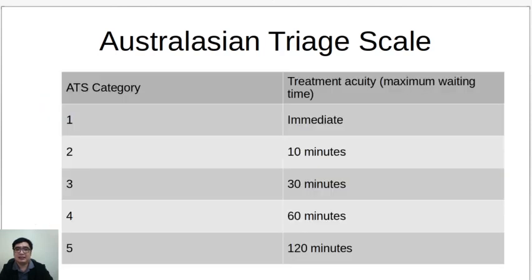The categories are important because you have an associated maximum waiting time. For category one, you need to treat these patients immediately. Category two patients will have a maximum waiting time of 10 minutes. Category three would be 30 minutes. Category four would be 60 minutes. And category five would be 120 minutes.